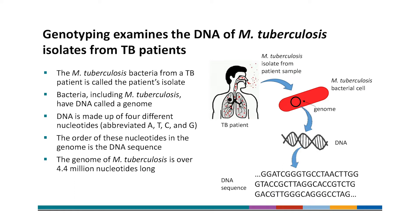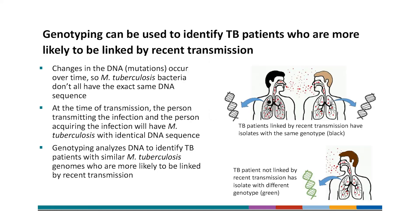The genome of M-tuberculosis is over 4.4 million nucleotides long. Genotyping can be used to identify TB patients who are more likely to be linked by recent transmission. Changes in the DNA, called mutations, occur over time, so M-tuberculosis bacteria don't all have the exact same DNA sequence. At the time of infection, the person transmitting the infection and the person acquiring the infection will have M-tuberculosis with identical DNA sequence. Genotyping analyzes DNA to identify TB patients with similar M-tuberculosis genomes who are more likely to be linked by recent transmission. In this schematic, transmission is occurring between these two people at the top, and they have M-tuberculosis isolates with the same genotype, shown in black. But this person at the bottom is not part of that transmission chain, and has an M-tuberculosis isolate with a different genotype, shown in green.